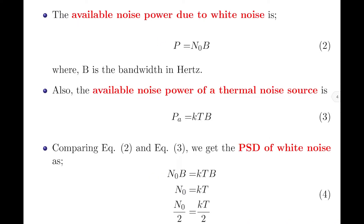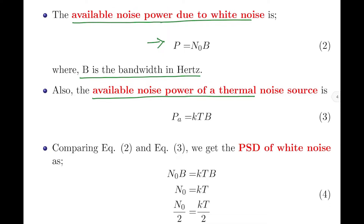Let us now find the available noise power due to white noise. The available noise power is given by P = N₀ · B, where B is the bandwidth in hertz of the device used to measure the power. You should also note that the available noise power of a thermal noise source is given by P_A = KTB. This equation was derived in my previous video when discussing thermal noise. Comparing these two equations gives us an expression for the power spectral density of white noise.